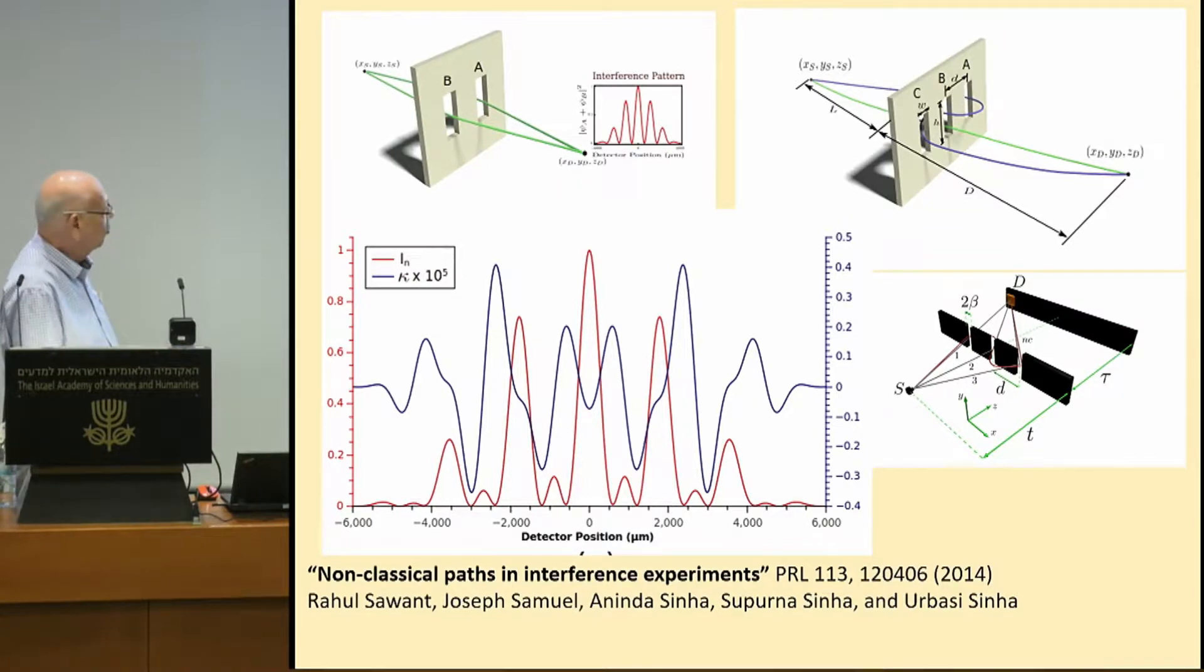If you include in your calculation not only the classically allowed trajectories, but also those that are strange, like the ones in blue here, then you expect something which will not be a simple interferogram that you will get using wave equation. You should get something different. And indeed, this experiment was done only recently.